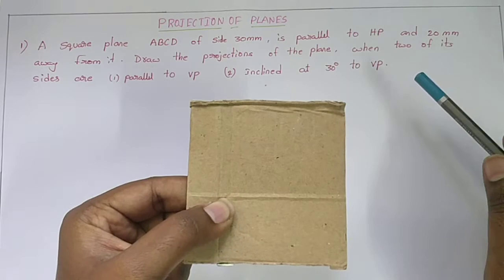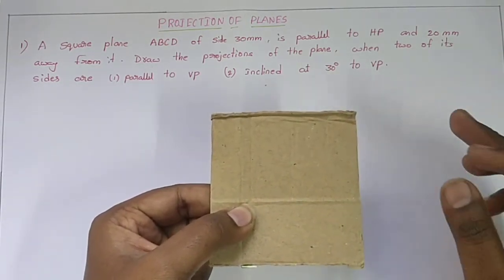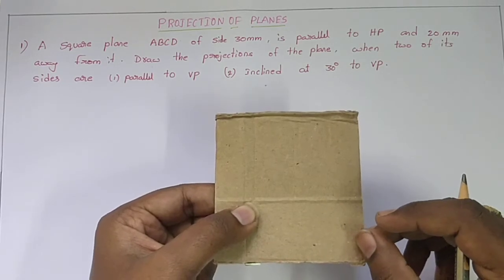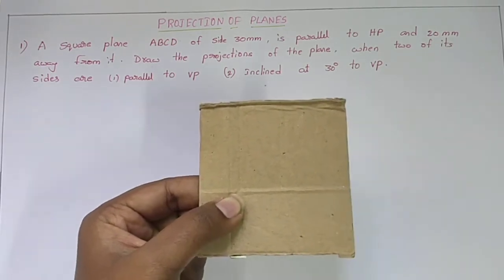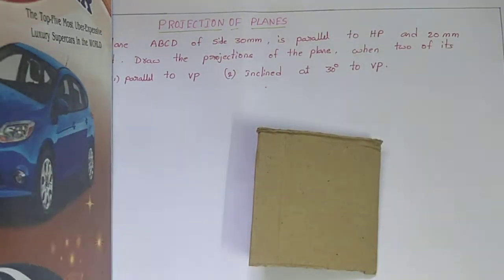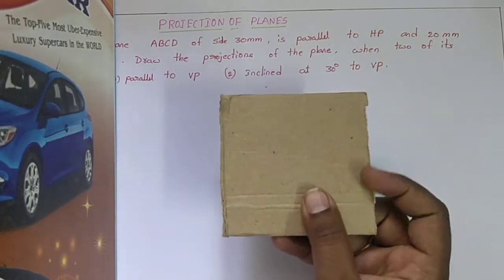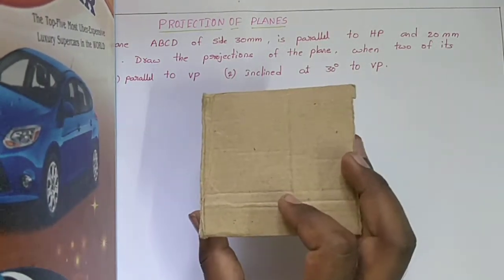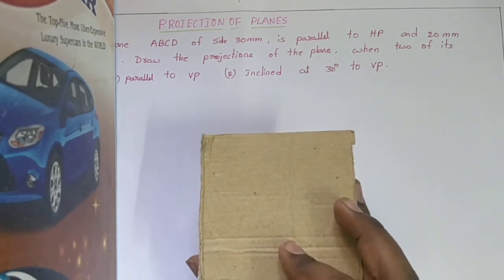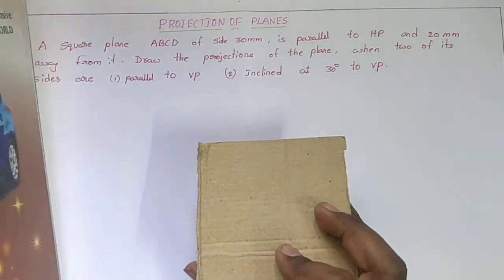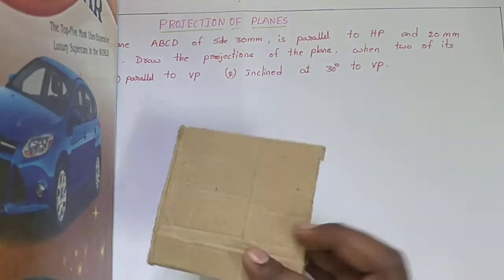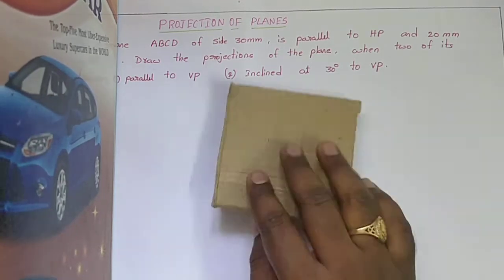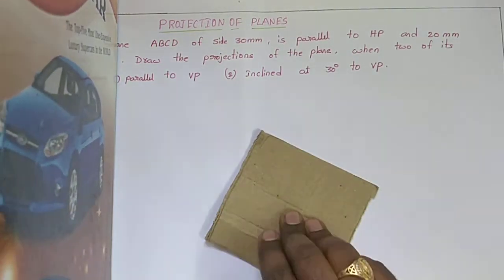Next, draw the positions of the plane when two of its sides are parallel to VP. Two of its sides are parallel to VP means — VP is a vertical plane — so one side and this other side, these two sides are parallel to VP. That means you have to place it like this. The second condition given is that two of its sides are inclined at 30 degrees to VP. The angle between this line and the vertical plane is 30 degrees.